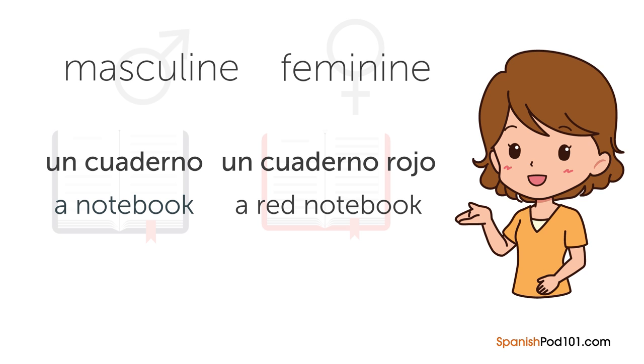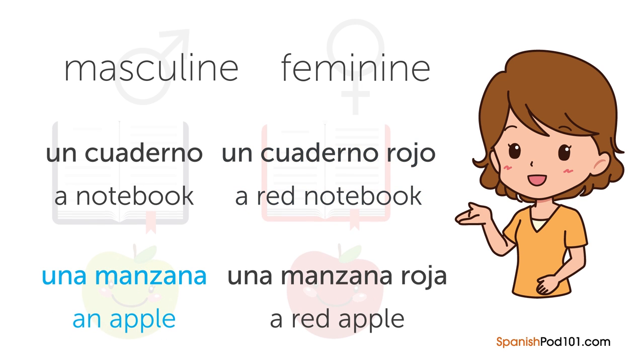For example: 'un cuaderno' a notebook is masculine, so a red notebook is 'un cuaderno rojo.' But 'una manzana' an apple is feminine, so a red apple is 'una manzana roja' — with 'rojo' changing to 'roja' ending with an A. I hope that answers the question. If you have any more questions, please leave them in the comments below and I'll try to answer them.